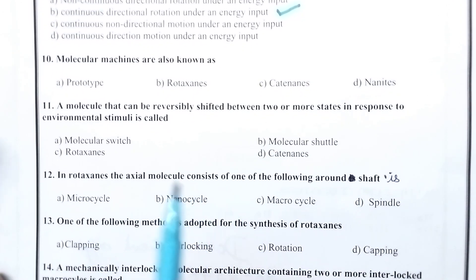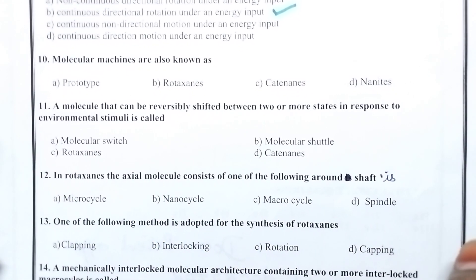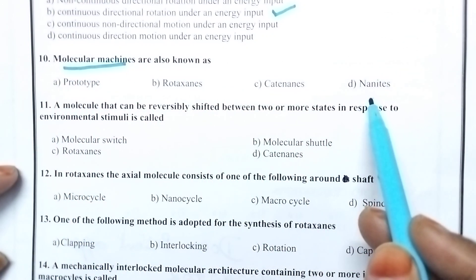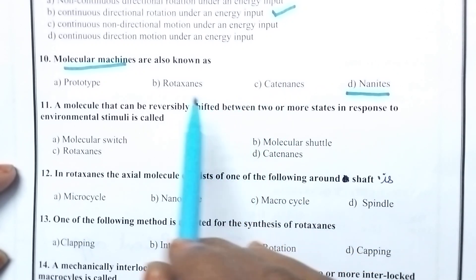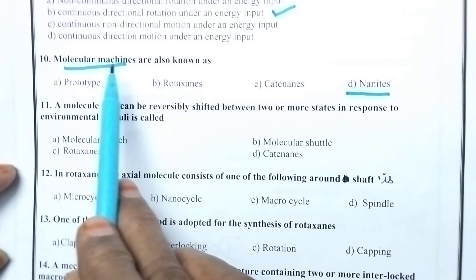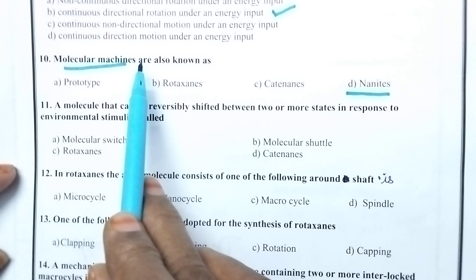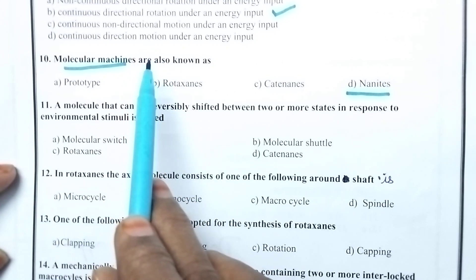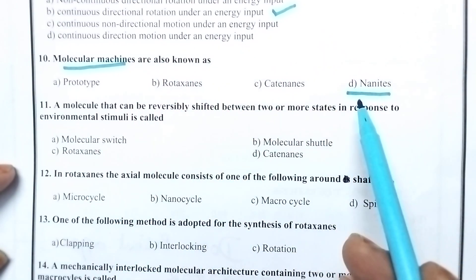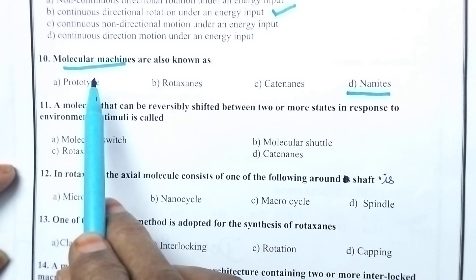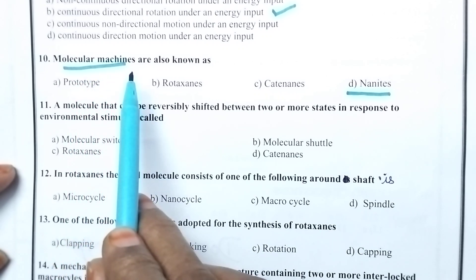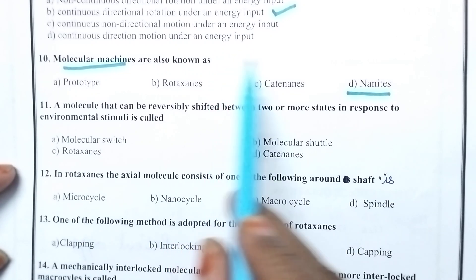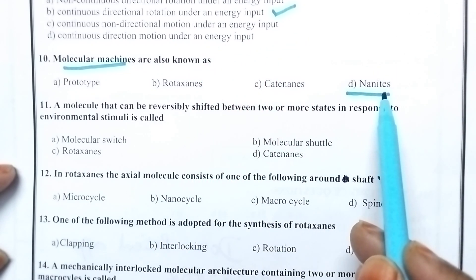Molecular machines are also known as — coming to molecular machines, they can be called as nanites. Molecular machines can be in the nanoscale, so nanoscale machines can be called as nanomachines. In other words, they can simply be called as nanites. So molecular machines have nano dimensions, and the machines with nano dimensions are called nanomachines or nanites.